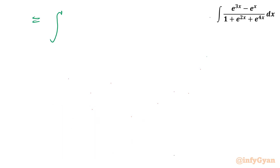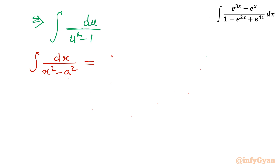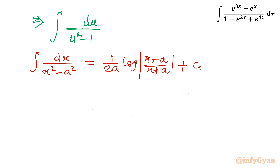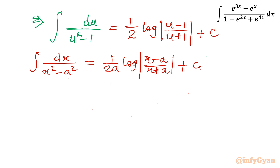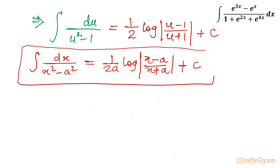We know the standard result: the integral of dx / (x² - a²) = (1/2a) log|( x - a) / (x + a)| + C. Using this formula with a = 1, our integral du / (u² - 1) gives (1/2) log|(u - 1)/(u + 1)| + C.